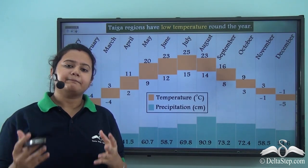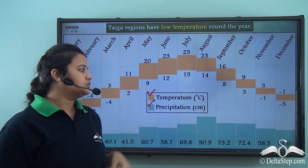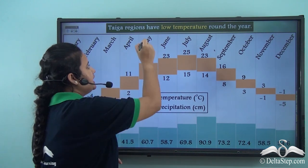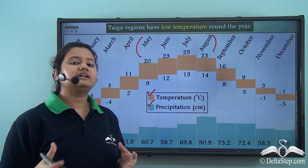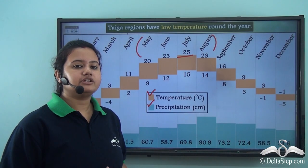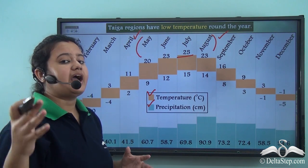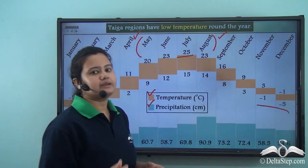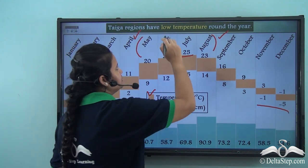This chart shows the temperature and precipitation conditions of Taiga regions. During summer, the temperature remains high for a limited period, but the average temperature hardly rises above 25 degrees Celsius. During winter, from September to April, the temperature drops significantly and frequently falls below freezing point. Based on these conditions, we can conclude that Taiga regions have low temperature round the year.